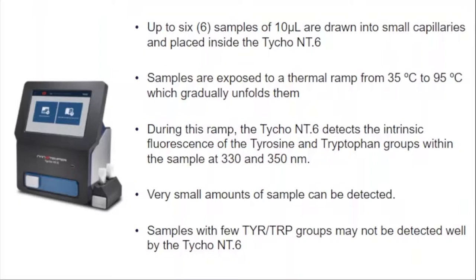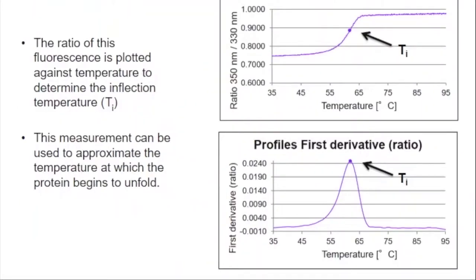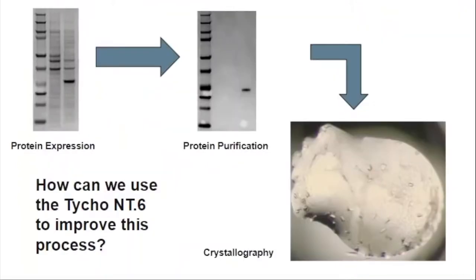Though I personally have had success with as little as one tyrosine or tryptophan. The TYCO is very, very sensitive and can detect really small amounts of sample. Here's an example of some data you might get out of a TYCO experiment. The ratio of the 350 nanometer and 330 nanometer fluorescence is plotted on a graph against the temperature, giving us a nice curve both in ratio and the derivative of that ratio. This gives us an inflection temperature, which is an approximate measurement of when the protein begins to unfold.